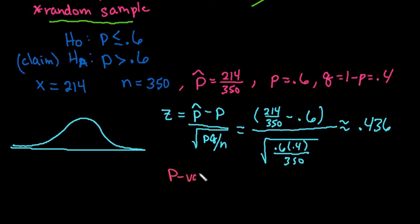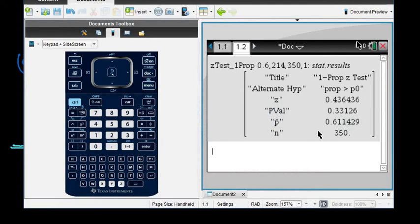So remember the P value, what it is, it's the probability of getting a sample proportion that is greater than, sorry, our sample. The probability of getting the proportion greater than 214 over 350, or you could say it's the probability of getting this area on a normal curve, above the 0.436. So if we go back, our P value right here is the 0.33126.